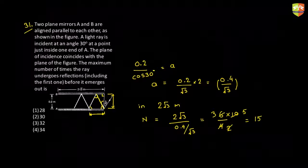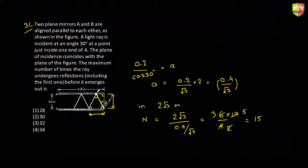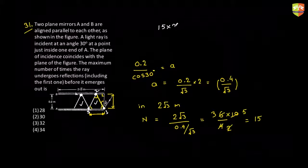You will have 15 equilateral triangles. Every edge of an equilateral triangle represents one reflection. So if there are 15 equilateral triangles, you may think that 15×3 = 45 reflections, but those reflections are counted twice. So per equilateral triangle, if you count just two reflections, you cover all the reflections. Hence, number of reflections = 15×2 = 30, so option 2 is correct.